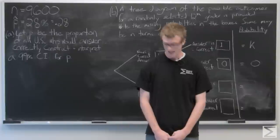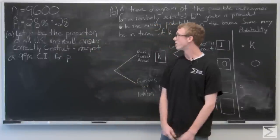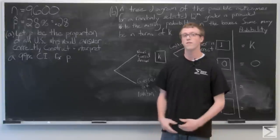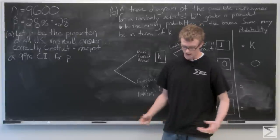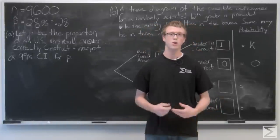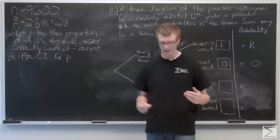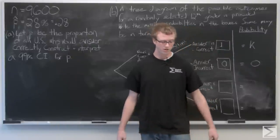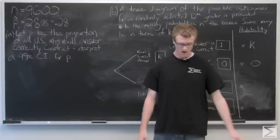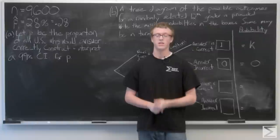Our first question is Part A: let P be the proportion of all U.S. students who would answer the question correctly. Construct and interpret a 99 percent confidence interval for P. First we need to identify the correct inference procedure, which is a one-sample Z interval for a population proportion P. P is the proportion of all 12th graders who would answer the question correctly. We need to check our conditions for inference: the sample must be random and the sample must be large enough.